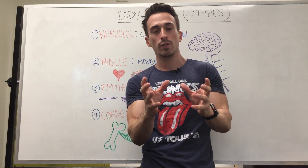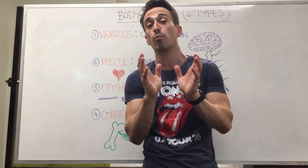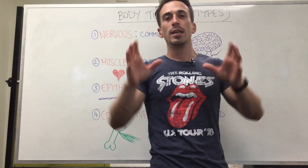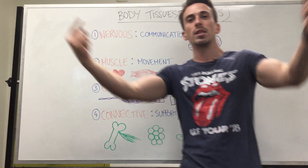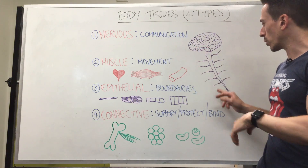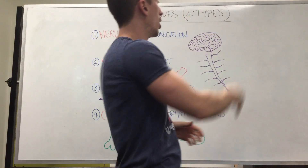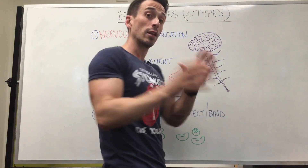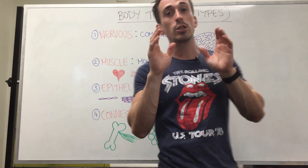The functional cell of the nervous system — the cell that allows for communication to occur — is the primary function of nervous tissue. These are called neurons. These individual cells coming together form the brain, the brain stem, the spinal cord, and also the nerves that go out and come back in. The brain has 12 pairs of cranial nerves, and we've also got the spinal nerves.